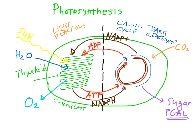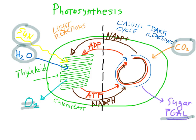So let's summarize: the main goal from the plant's point of view is to make simple plant sugar. This uses energy from the sun, water, and carbon dioxide. Notice that oxygen is considered a waste product.